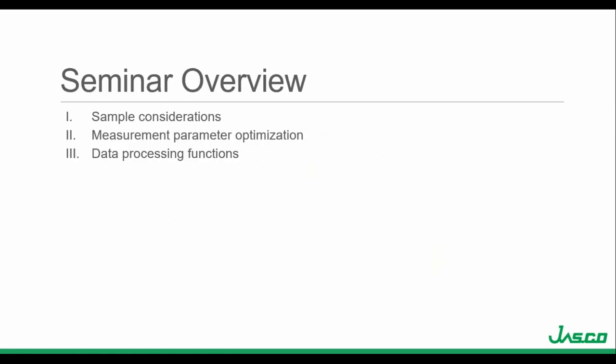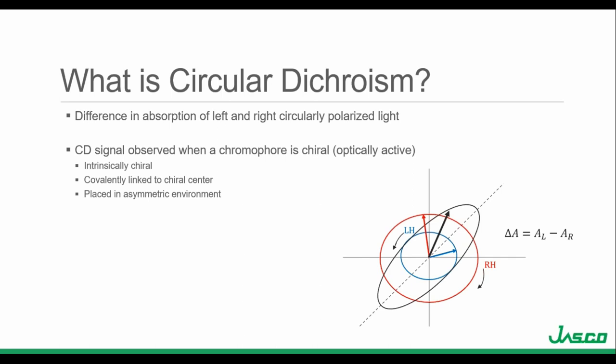Today's seminar overview will go over sample consideration, measurement parameter optimization, and a few data processing functions. To quickly review: circular dichroism is the difference in the absorption of left- and right-handed circularly polarized light. CD signals are observed when a chromophore is chiral or optically active, and aside from being intrinsically chiral, you can observe a CD signal when a chromophore is covalently linked to a chiral center or placed in an asymmetric environment.